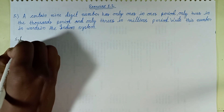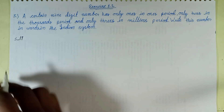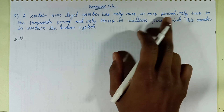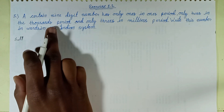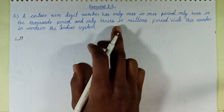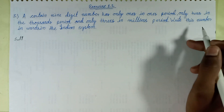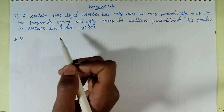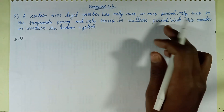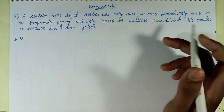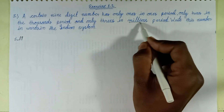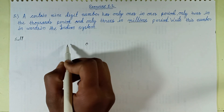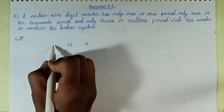Solution. The question states: A certain 9-digit number has only 1 in the ones period, only 2 in the thousands period, and only 3 in the millions period. Write these numbers in words in the Indian system.